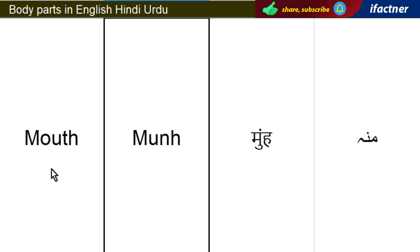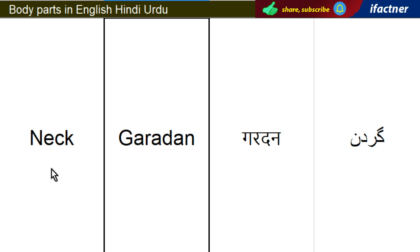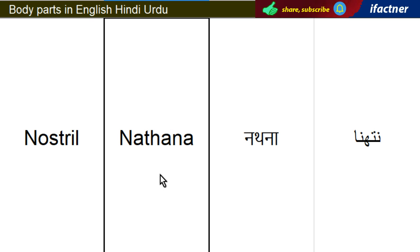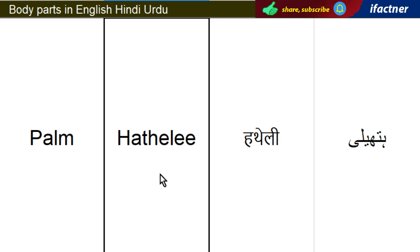Moonn — Mouth. Naaf — Navel. Gerdan — Neck. Naak — Nose. Nath, Naa — Nostril. Hathayli — Palm.